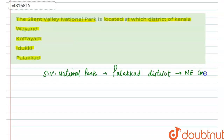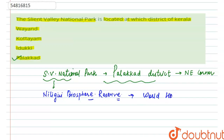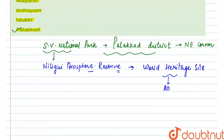Palakkad district is in the north-east corner of Kerala. The valley constitutes the centerpiece of the Nilgiri Biosphere Reserve. Here you can see the Silent Valley National Park as the centerpiece of the Nilgiri Biosphere.